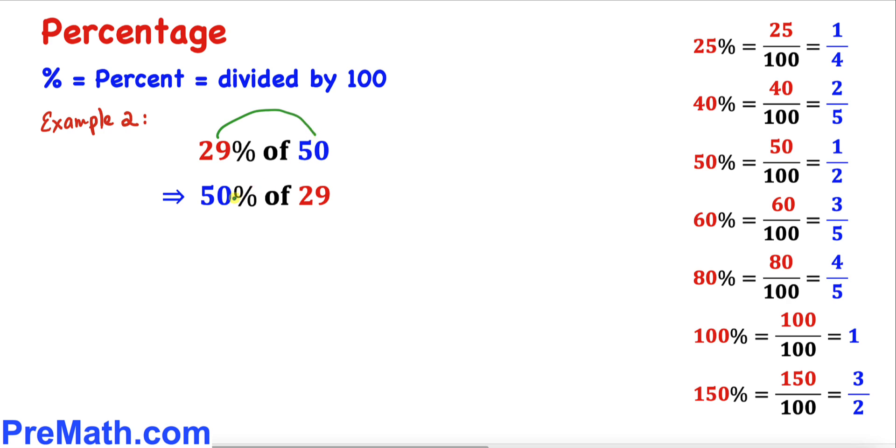Here's our next example: 29 percent of 50. If we switch these numbers around, that is going to be written as 50 percent of 29. Therefore I can write 1 over 2, that means multiplication, and then 29.